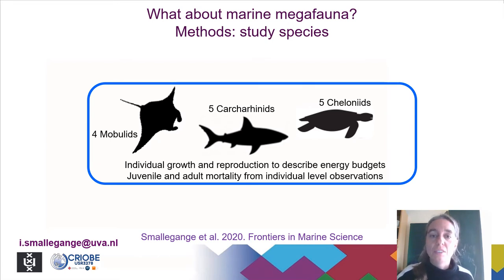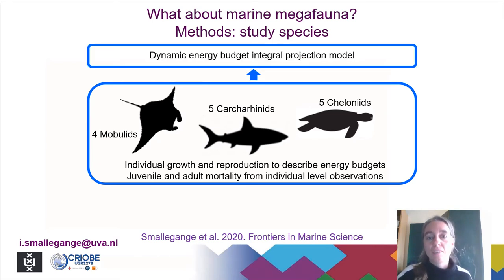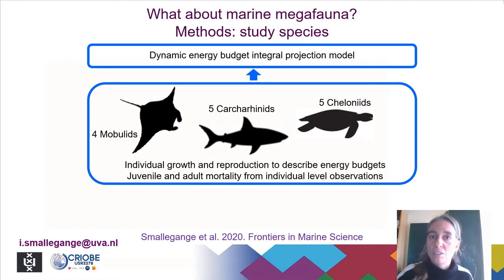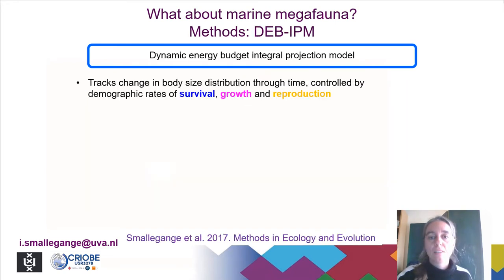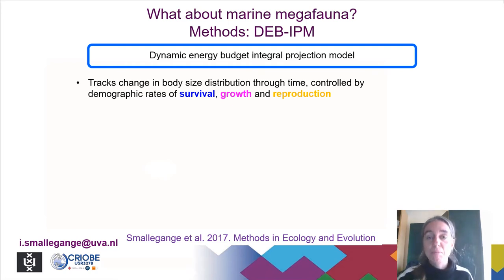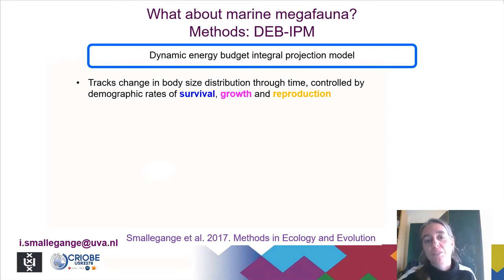We also collected data on juvenile and adult mortality rates from individual-level observations. We used these individual-level life history data to parameterize a dynamic energy budget integral projection model, which we then used to calculate quantities that inform on population responses to changes in the environment.